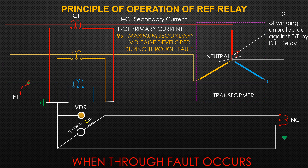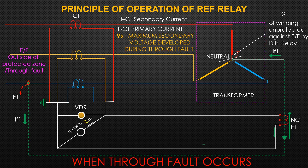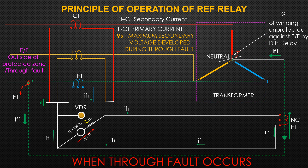When there is a fault outside the protected zone, the CT secondaries will cancel each other's currents. This is partly true even if both or only one of the CTs saturates, because the impedance of a saturated CT secondary will collapse to near zero. The non-zero wiring impedance and CT impedance will however cause a voltage, but the stabilizing resistor will prevent the relay from tripping.